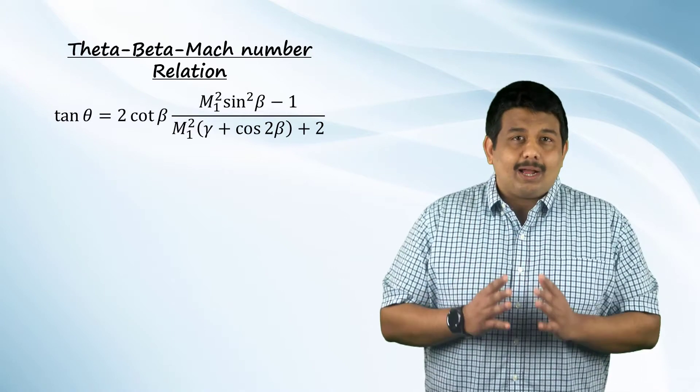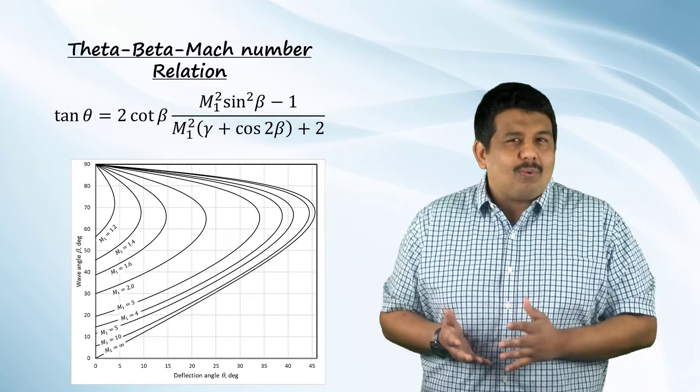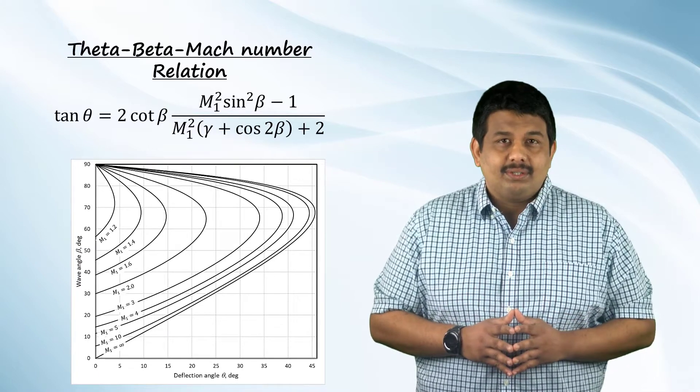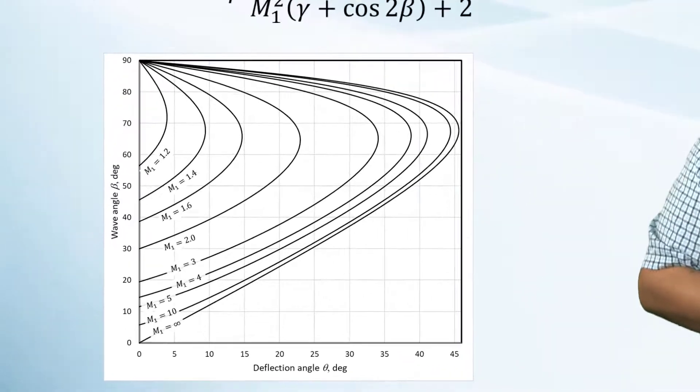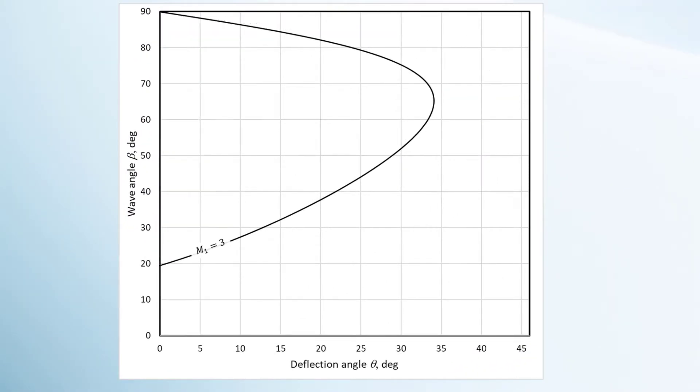The curves obtained from this relation are shown here. There are quite a few observations that can be made from these curves. Let's look at them one by one. For any given upstream Mach number, there exists a unique maximum deflection angle i.e. theta-max. We will discuss what happens if the theta is greater than theta-max in a little bit.